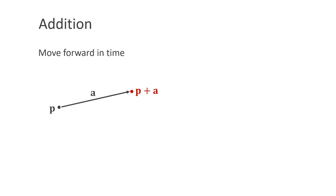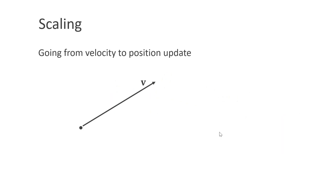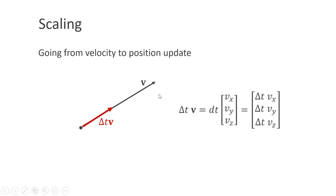The first operation is addition. We can use this to move forward in time. Let's say we have p, the position of a particle, and we want to add a. To do this, we can simply add all the components individually. A second operation is scaling. We can use this to go from a velocity to a position update. Scaling means that we multiply a vector by a simple number, here delta t. To do this, we simply multiply all the components individually.